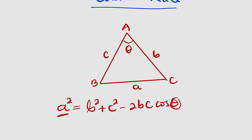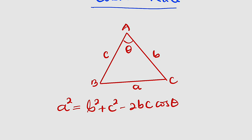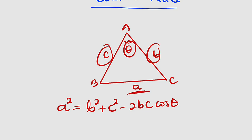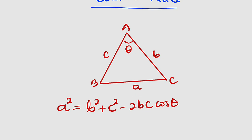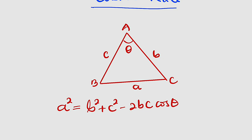So if you are looking for side length a, this angle must be given. And if you are looking for angle theta, the side length a and the other two sides must be given for you to use this formula. To use this formula you need the included angle to find the side length, and if you are looking for an angle, all three sides must be given.